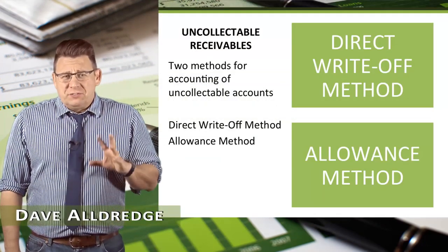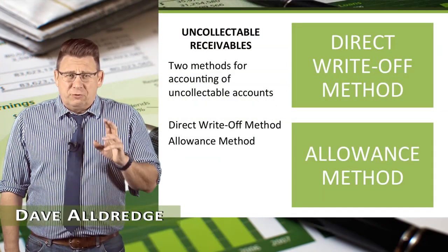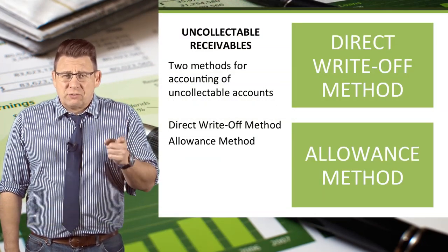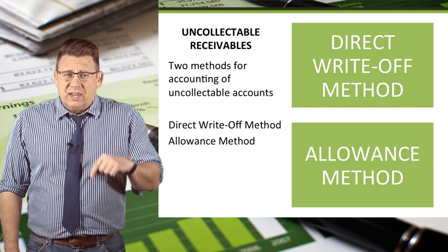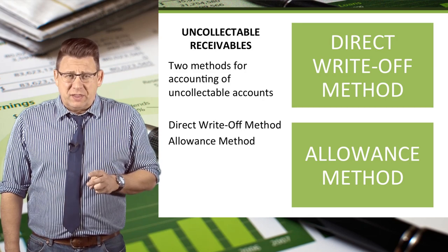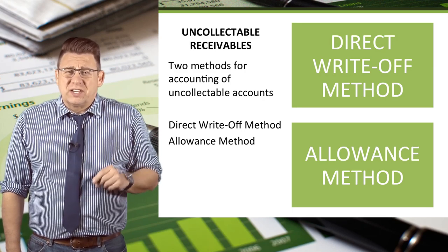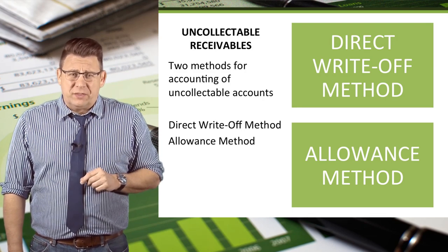There are two methods for accounting for uncollectible accounts: the direct write-off method and the allowance method. This video will focus on the allowance method.